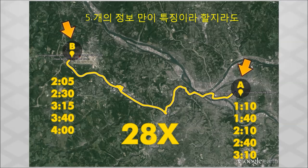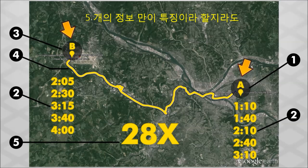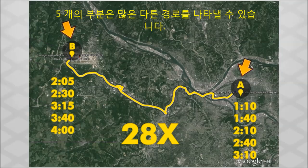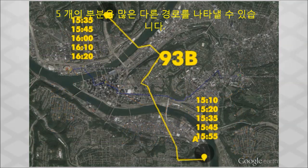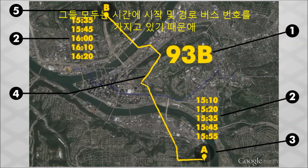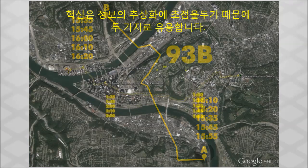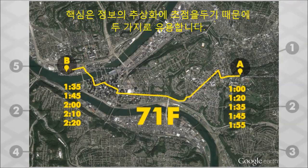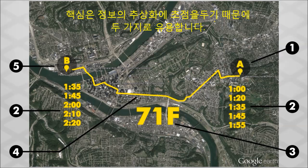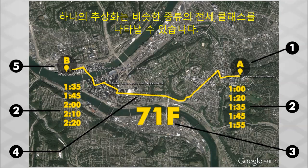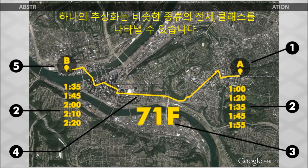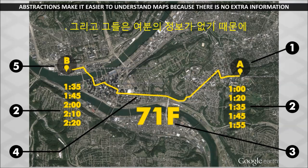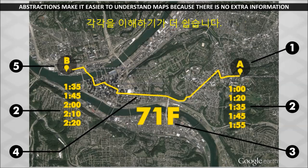Note that even though it features only five pieces of information, those five pieces can represent many different routes, because every one of them has a start, end, route, bus number, and times. Because abstractions focus on the key pieces of information, they are doubly useful. A single abstraction can represent a whole class of similar things, and they make it easier to understand each one, because there is no extra information present.